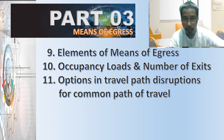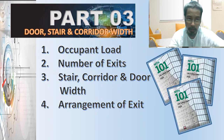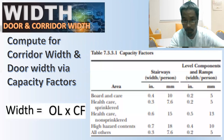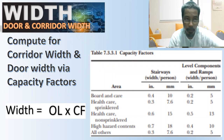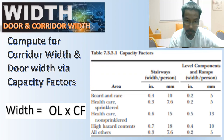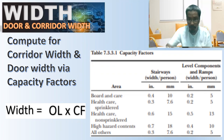Again, there are three major parts. We are currently on Module 10, third part, pertaining to stair corridors and doors. Previously we discussed door and corridor width and how to compute for corridor width and door width using capacity factors. The formula is: width equals occupant load times capacity factor.